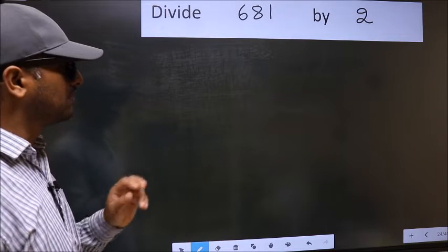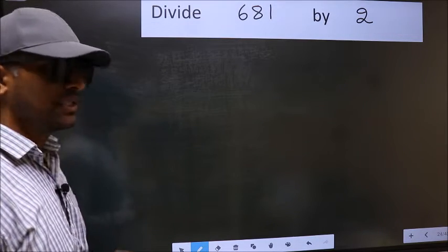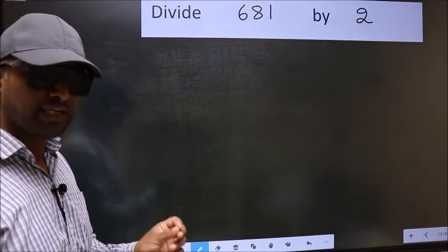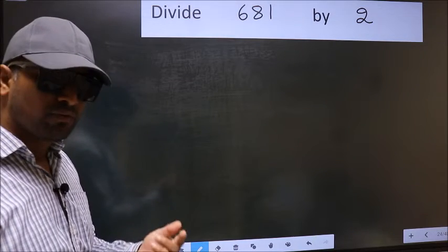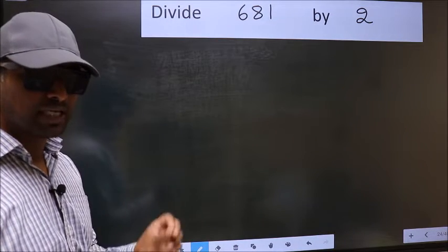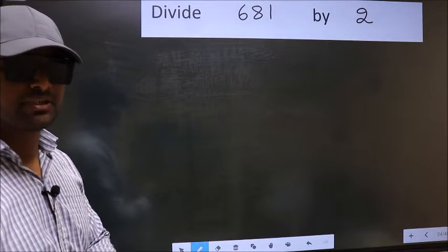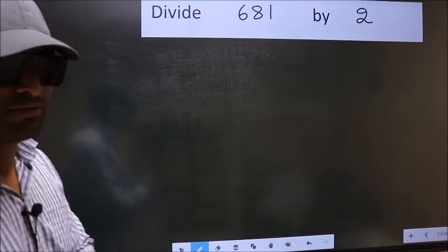Divide 681 by 2. While doing this division, many do this mistake. What is the mistake that they do, I will let you know. But before that, we should frame it in this way.